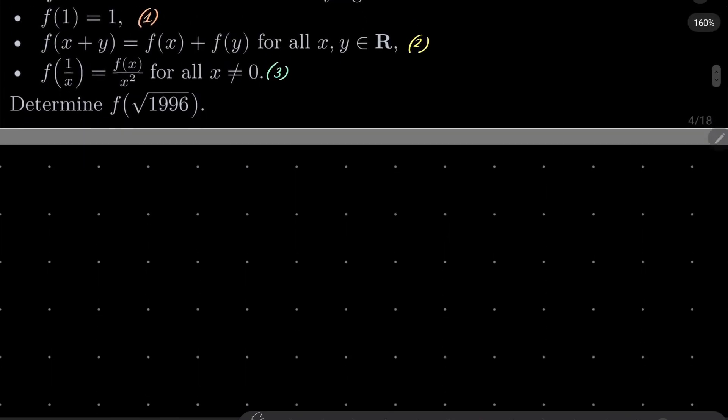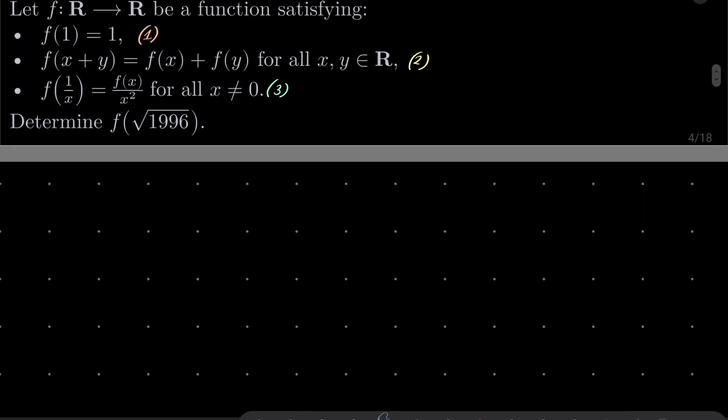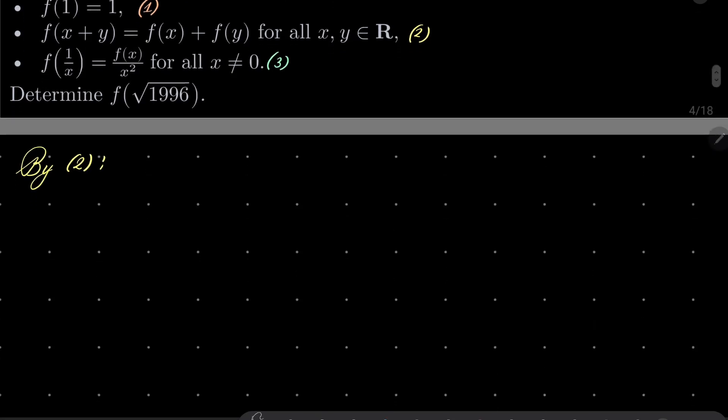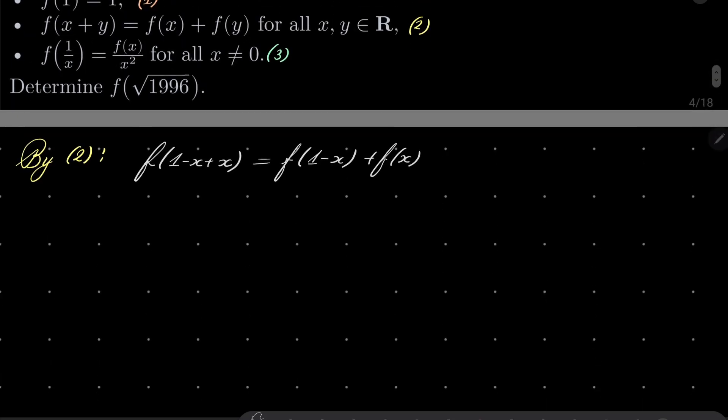Alright, so let's start with noticing that by condition number 2, we can write the following: f(1-x) + f(x) is exactly the same as f(1-x+x). And now by condition number 1, on the left hand side we have just f(1), but f(1) is 1. So 1 - f(x) = f(1-x). Let's call this equation 4. We will use it.